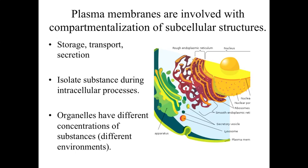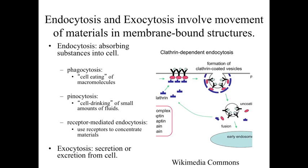Plasma membranes are often referred to as the cell membrane because of that major component around the outside of the cell. But we're also going to have plasma membranes involved with the compartmentalization of subcellular structures — smaller structures within the cell that remain membrane-bound. These are important for when we want to store materials, transport materials without losing them or having them diffuse away within the cell, or when we want very controlled, regulated secretion. It's important to have these membrane-bound structures so we can concentrate and isolate substances into specific regions of the cell. The organelles are going to have very different characteristics and materials depending on what type of organelle we're talking about.